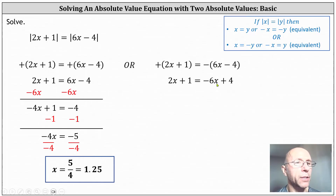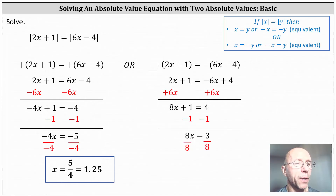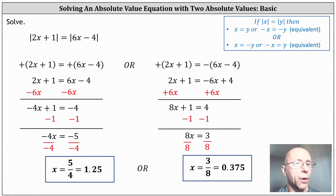To solve for x, let's add 6x to both sides. Simplifying, we have 8x plus 1 equals 4. Subtracting 1 on both sides, we have 8x equals 3. Dividing both sides by 8, we have x equals three eighths, or as a decimal 0.375.